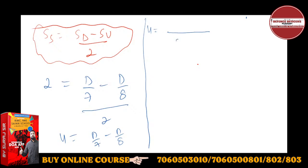So 4 equals 8D minus 7D upon 56. From here, D equals 56 into 4, which is 224 kilometers. The distance will be 224 kilometers.